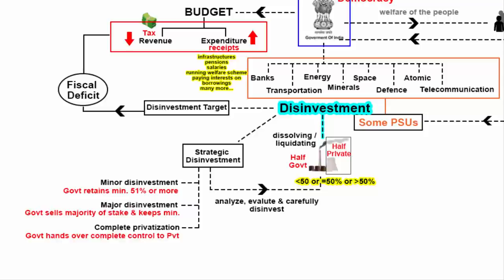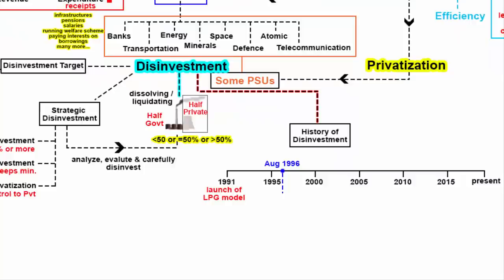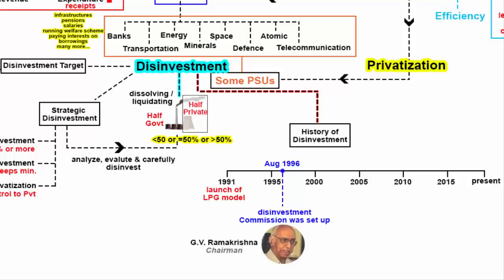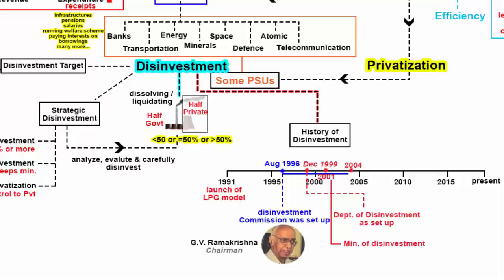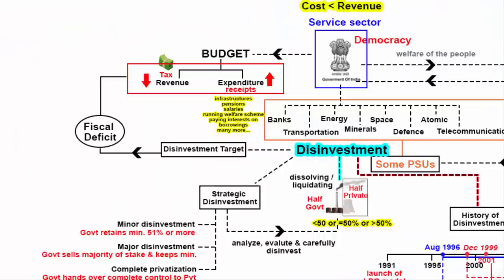Who started disinvestment in India and which institution was given that responsibility? In August 1996, the Disinvestment Commission was set up and chaired by G.V. Ramakrishna, with the purpose of advising, supervising and monitoring Indian PSUs. However, this commission ended in May 2004. Then in December 1999, the Department of Disinvestment was set up, later renamed as Ministry of Disinvestment in 2001. In 2004, it was brought under the Ministry of Finance. In 2016, it was renamed as the Department of Investment and Public Asset Management. All money generated from the sale of central public sector enterprises is channelized into the National Investment Fund, constituted in November 2005.